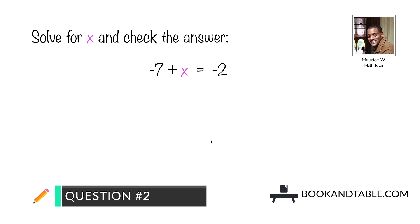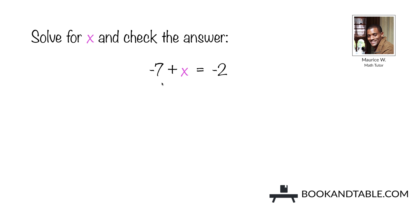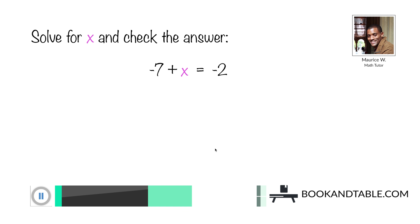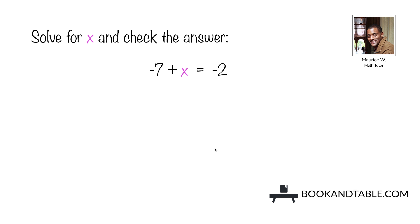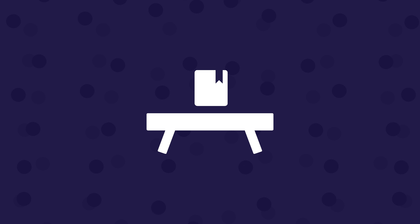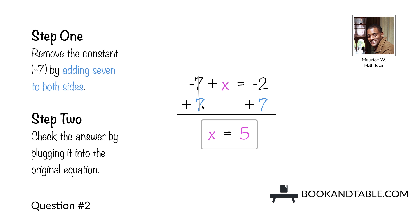Question number two: solve for x and check the answer. Negative 7 plus x is equal to negative 2. Step one: remove the constant negative 7 by adding 7 to both sides. Negative 7 plus 7 is 0, leaving you with just x on the left side. On the right side we wind up with negative 2 plus 7, which equals 5. So the answer to question number two is x is equal to 5.